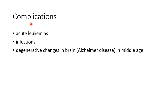Now let us see about the complications of Down syndrome. These patients are at an increased risk of developing acute leukemias. They are more susceptible to infections. One important complication of Down syndrome is degenerative changes in the brain similar to Alzheimer's disease, which can occur in middle age.